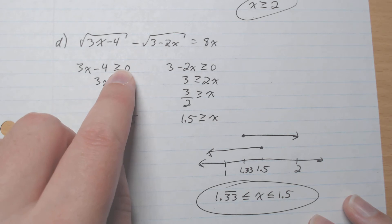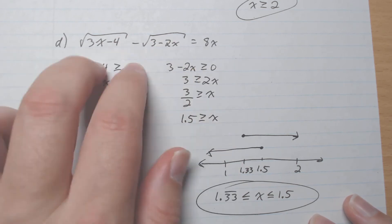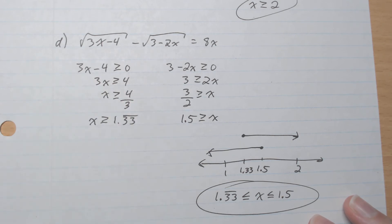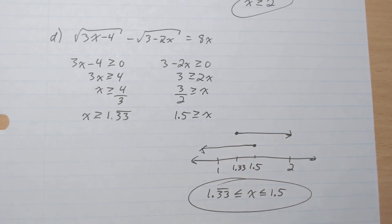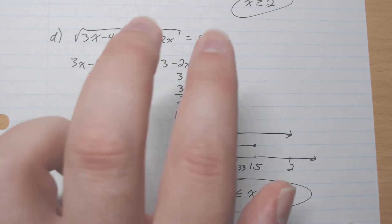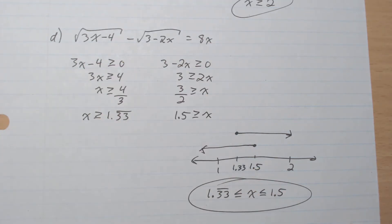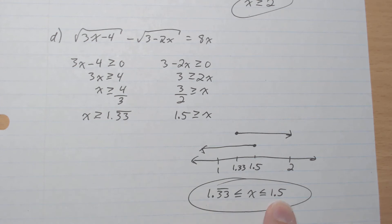For part e, we have two conditions: 3x minus 4 must be greater or equal to 0, and 3 minus 2x must be greater or equal to 0. Adding 4 and dividing by 3, x must be greater or equal to approximately 1.33. For the second condition, adding 2x and dividing by 2, x must be less or equal to 1.5. What's in common is x is between 1.33 and 1.5.